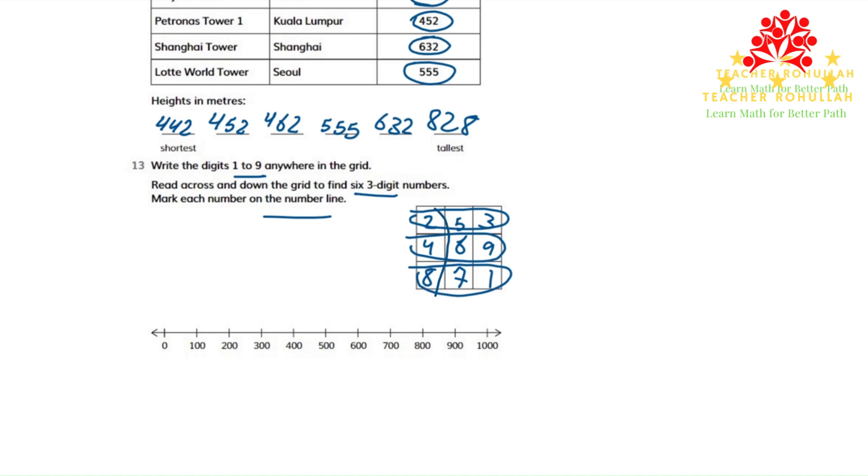When we read down, the first one is 248. The second one is 567. And the third one is 391.